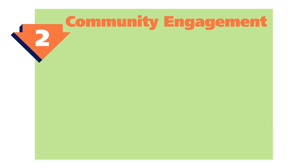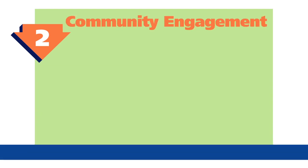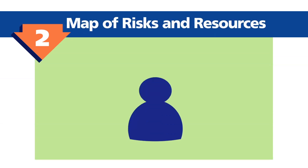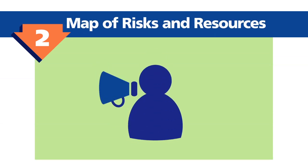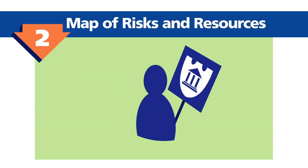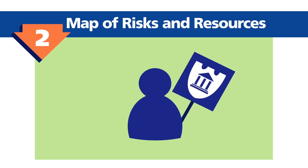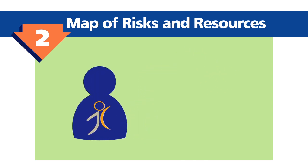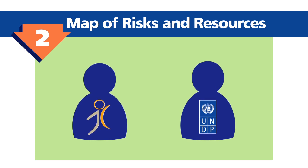The second step is community engagement. Through a methodology called Map of Risks and Resources, communities identify priority needs and interventions that are reflected in municipal action plans. Teams of staff from the Ministry of Social Affairs and UNDP provide facilitation throughout the process.